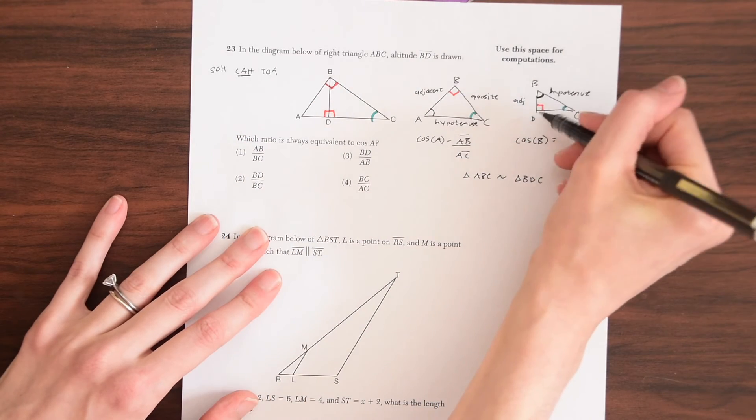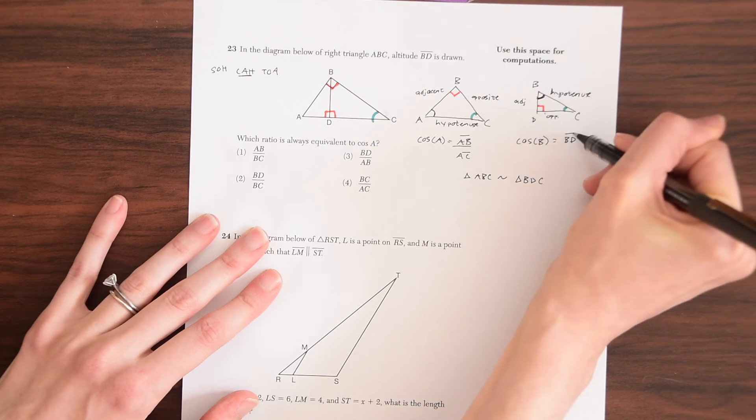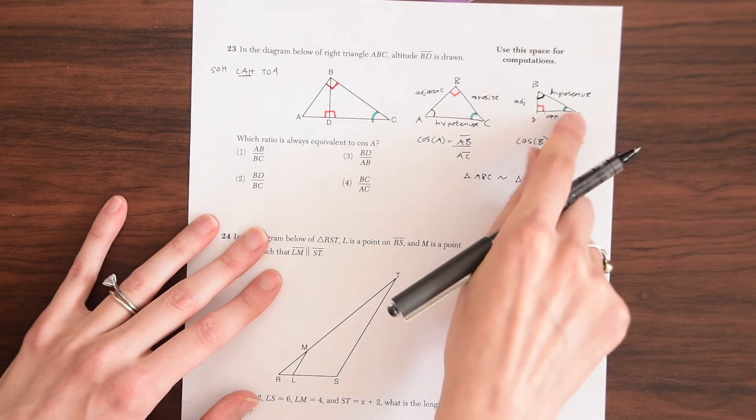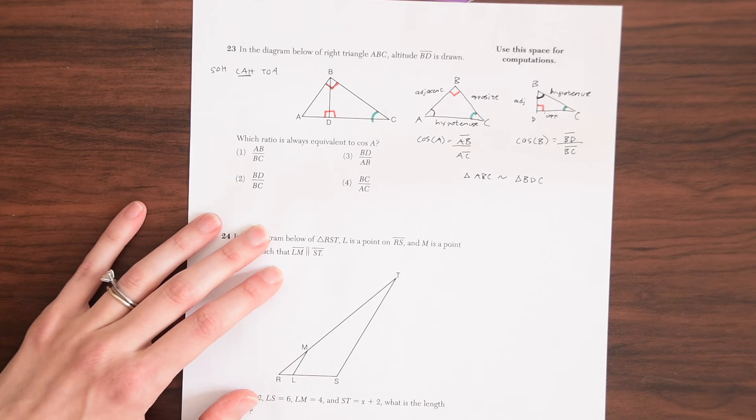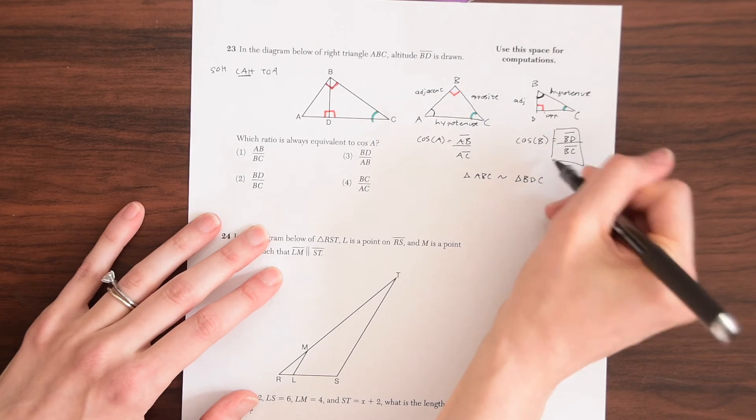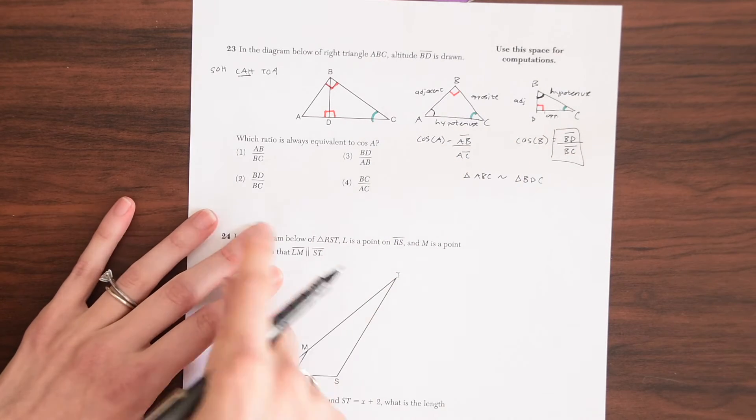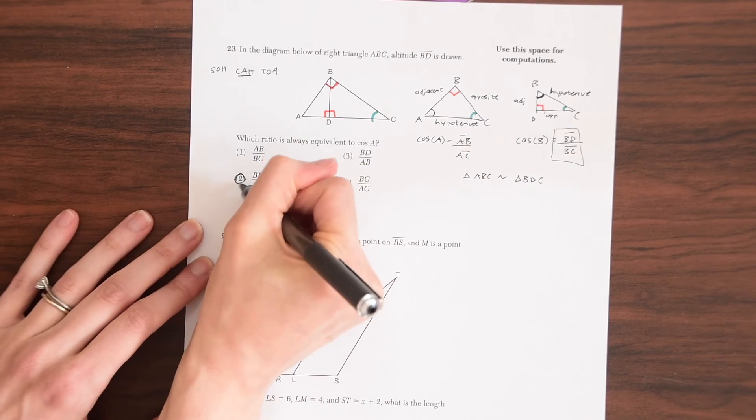So we have the cosine of B adjacent, which is line BD, line segment BD, all over the hypotenuse BC. And that's our answer. So this is our answer and we just need to find it now in our choices. So we see that it's choice two. That's our answer.